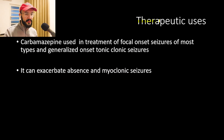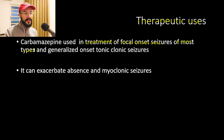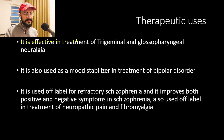Now let's talk about the therapeutic uses of carbamazepine. It is used in treatment of focal onset seizures of most types, and also in treatment of generalized onset tonic-clonic seizures. Carbamazepine can exacerbate absence and myoclonic seizures, which is why it is not given for patients suffering from those types. It is effective in treatment of trigeminal and glossopharyngeal neuralgia, and it is also used as a mood stabilizer in treatment of bipolar disorder.